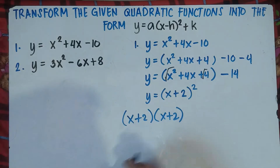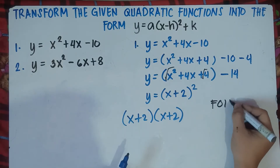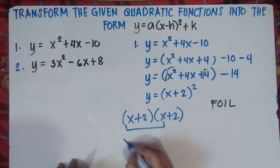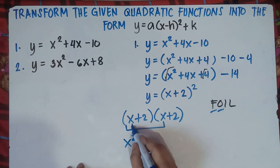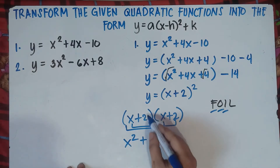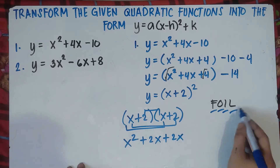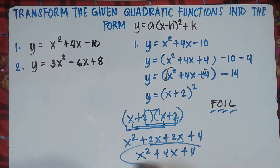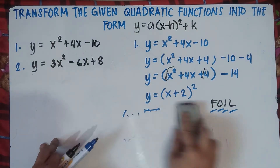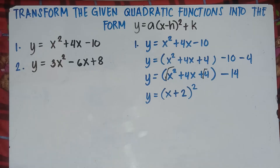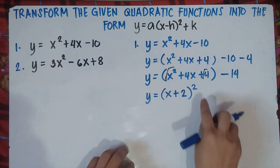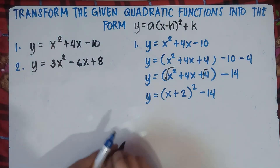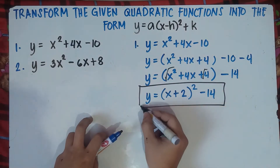Let's verify using the FOIL method — First, Outer, Inner, Last. x times x is x squared. x times positive 2 is positive 2x. 2 times x is positive 2x. Positive 2 times positive 2 is positive 4. Combining like terms: x squared, 2x plus 2x is 4x, plus 4. Same answer. So no need for FOIL — just get square roots, copy the sign, put quantity and square, then copy minus 14.